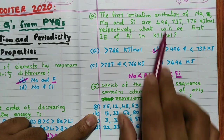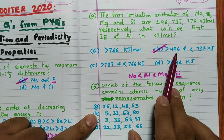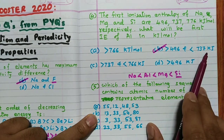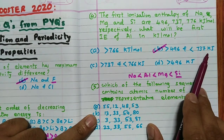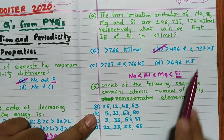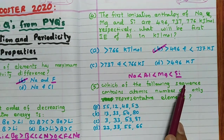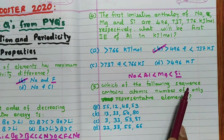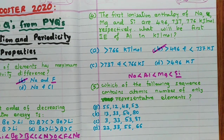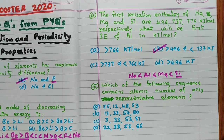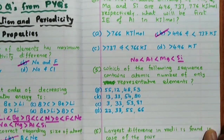So aluminum is between 496 and 737. This question was taken from the AIIMS exam. The answer is B.